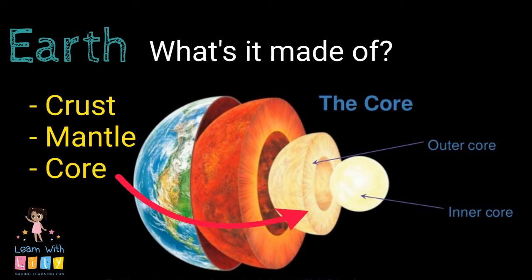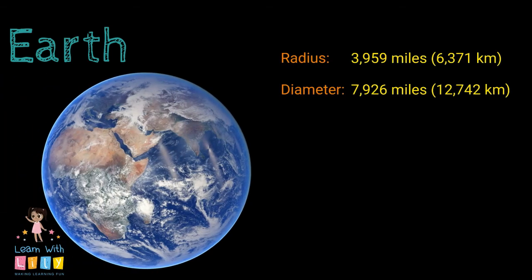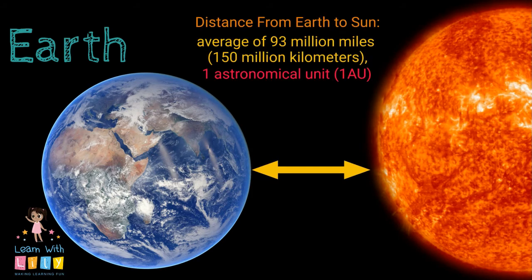The core is made up of iron and nickel. The outer core is liquid and the inner core is solid. It's really hot in there. The Earth's radius is 3,959 miles, that's 6,371 kilometers. And its diameter is 7,926 miles. That's 12,742 kilometers.